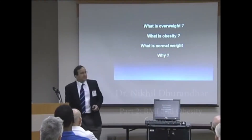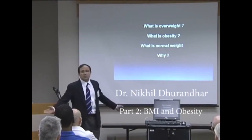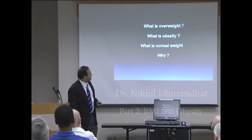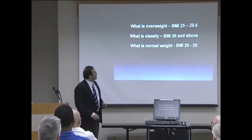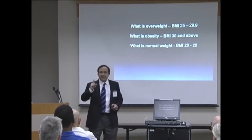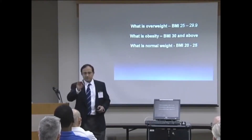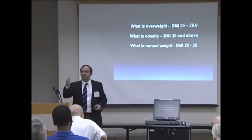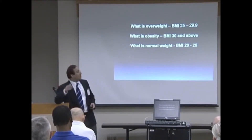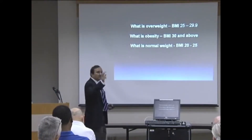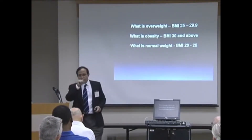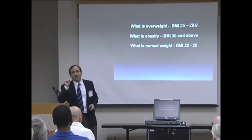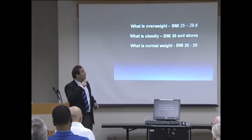What is overweight? What is obesity? And what is the normal weight? And the important question is why is that definition the way it is? Overweight is body mass index, or BMI. If your BMI is between 25 and 30, you are overweight. If it is above 30, it is obesity. And if you are between 20 and 25, you are a so-called normal weight person, depending on this BMI.